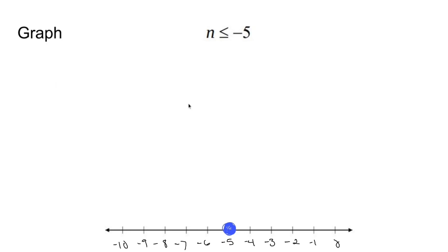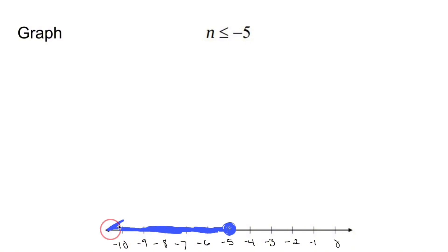N has to be everything less than that — anything smaller, like negative 6 is less than or equal to negative 5, or negative 8 is less than or equal to negative 5. So what we do is we shade to the left of our filled-in circle. The way I remember this: if your variable is on the left, that symbol acts as an arrow, and it points to the left.